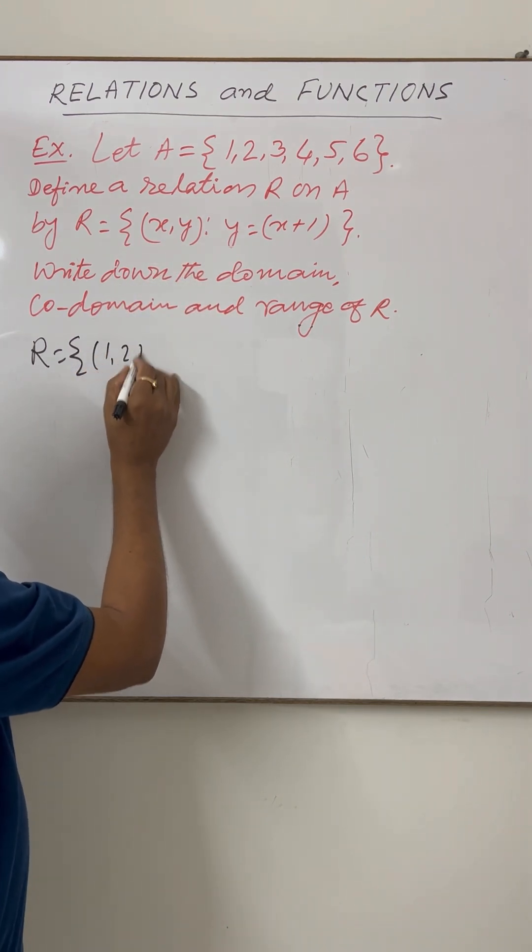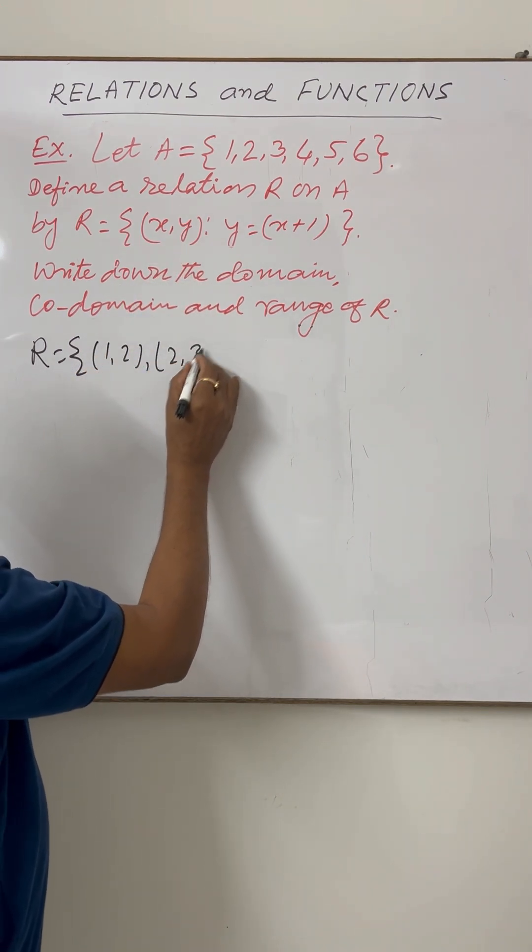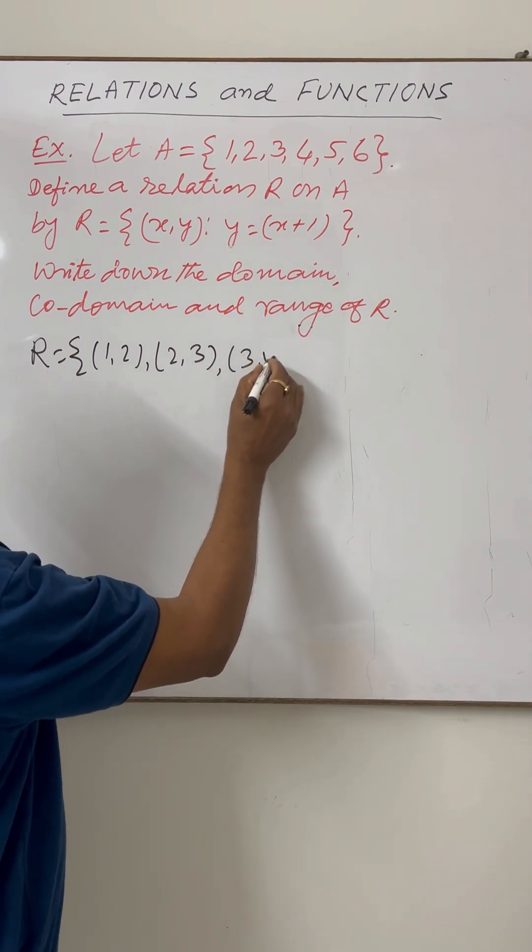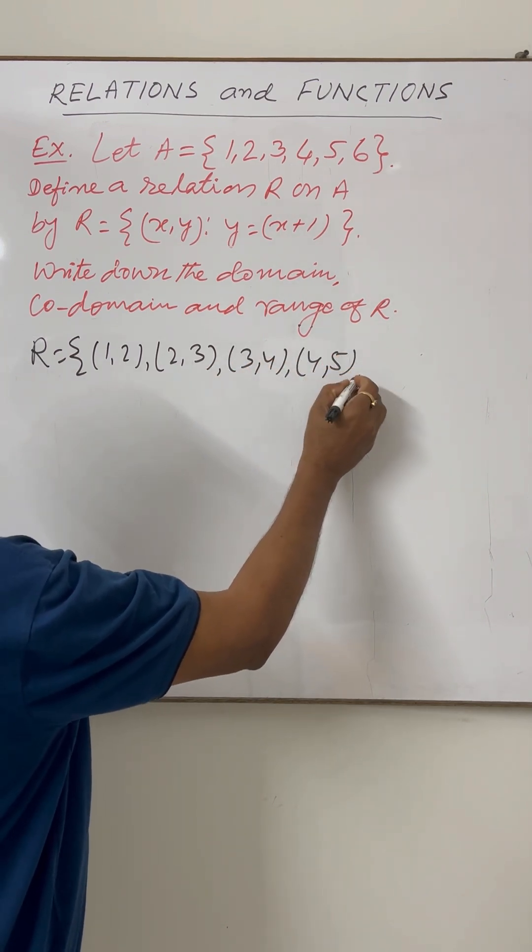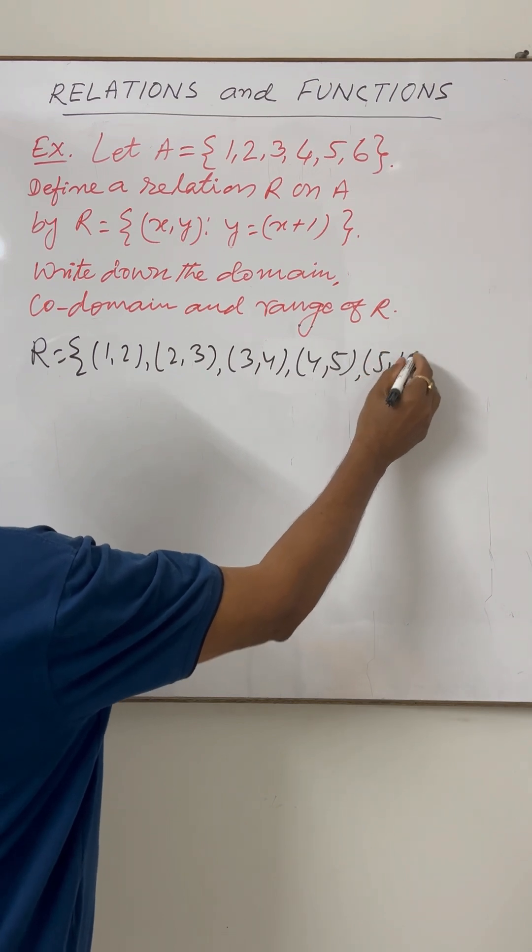So these ordered pairs will be (1, 2), (2, 3), (3, 4), (4, 5) and (5, 6).